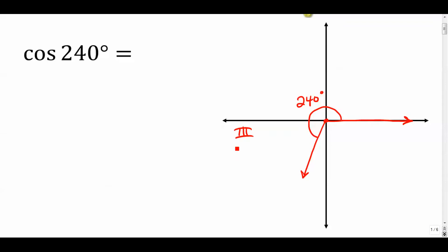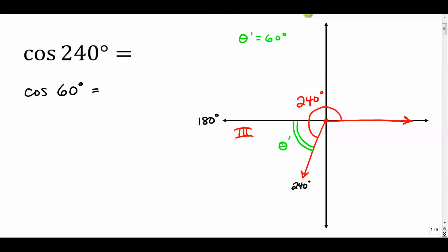From here we look at what we call the reference angle — that's the angle between the terminal side and the x-axis, called theta prime. This is 180 degrees right here, so if the angle is 240, the difference between 240 and 180 is 60. So the reference angle is 60 degrees.